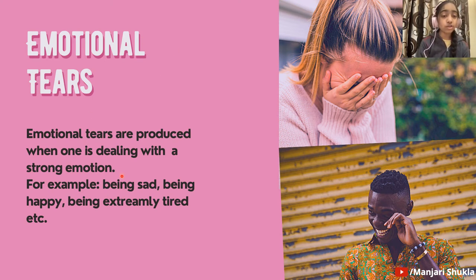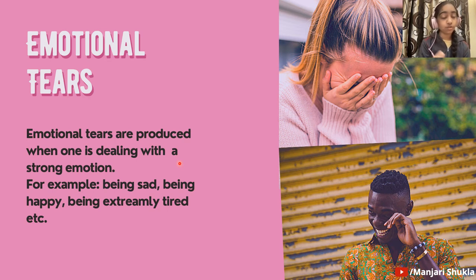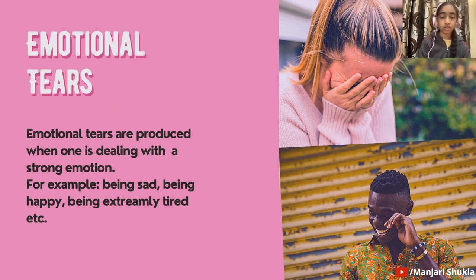Emotional tears are probably the most famous type. Emotional tears are produced when one is dealing with a strong emotion. For example, people cry when they're extremely sad, extremely happy, extremely tired, or even extremely angry. So emotional tears are produced when anyone is facing a very strong or intense emotion.